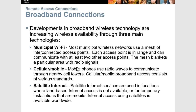Some other broadband connections include municipal Wi-Fi, cellular, and satellite. Municipal Wi-Fi kind of has to already be set up — it's not something you set up yourself. Most municipal Wi-Fi networks use a mesh of interconnected access points, each in range and able to communicate with at least two other access points. The mesh blankets a particular area with radio signals.